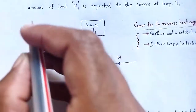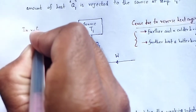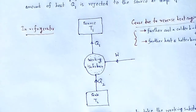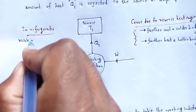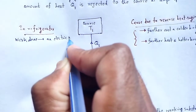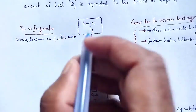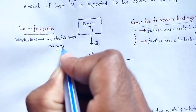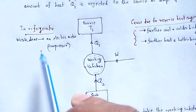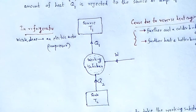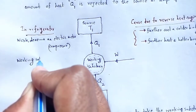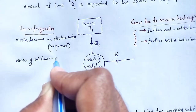In a refrigerator, the work is done by an electric motor, which is used as a compressor. Since work is done on the system, it acts as a compressor. The working substance in case of a refrigerator is freon gas.